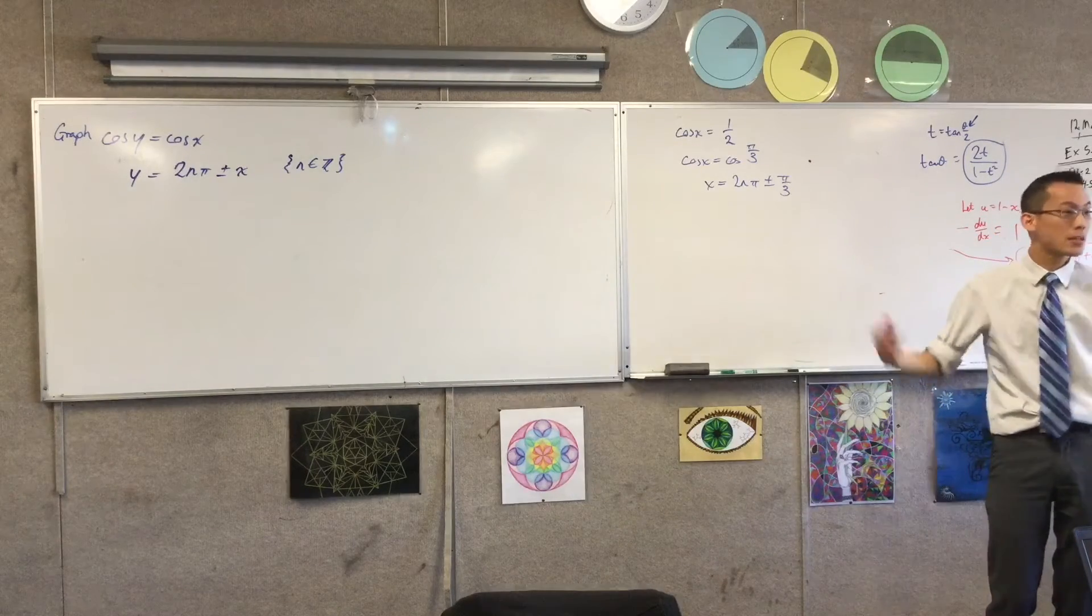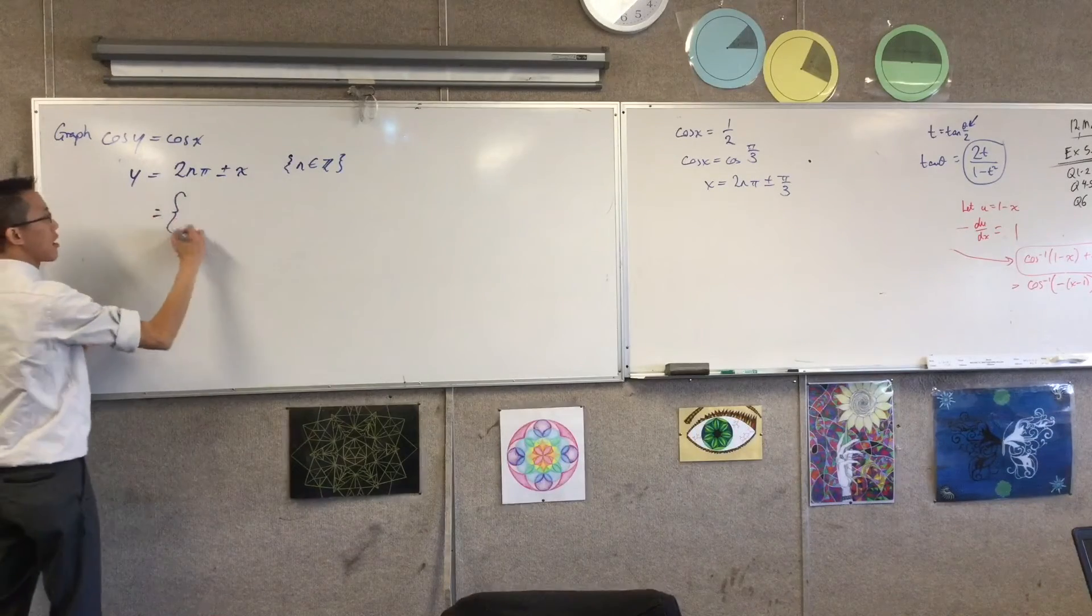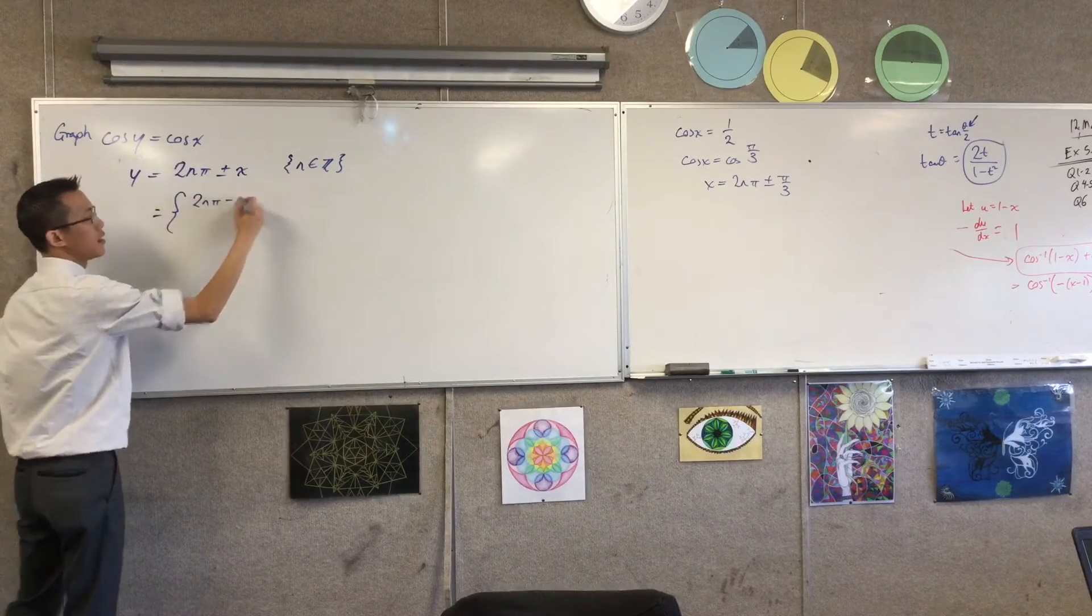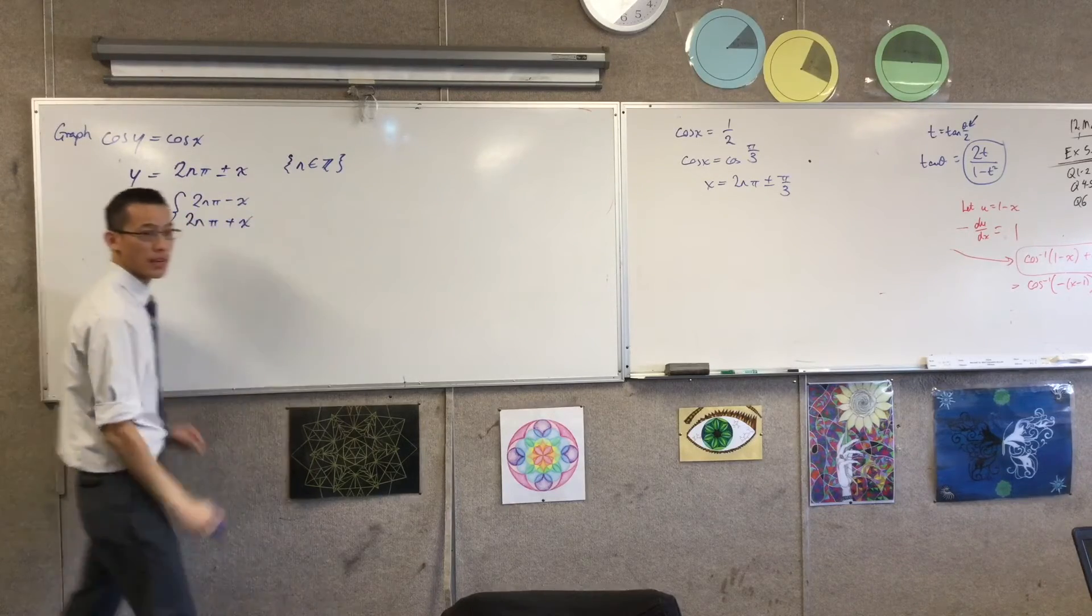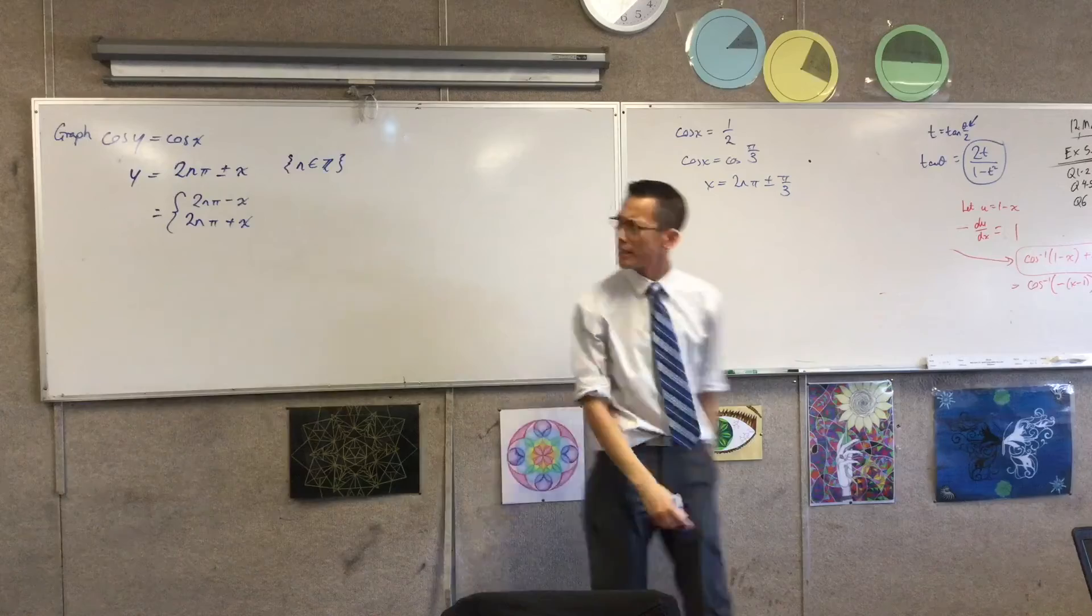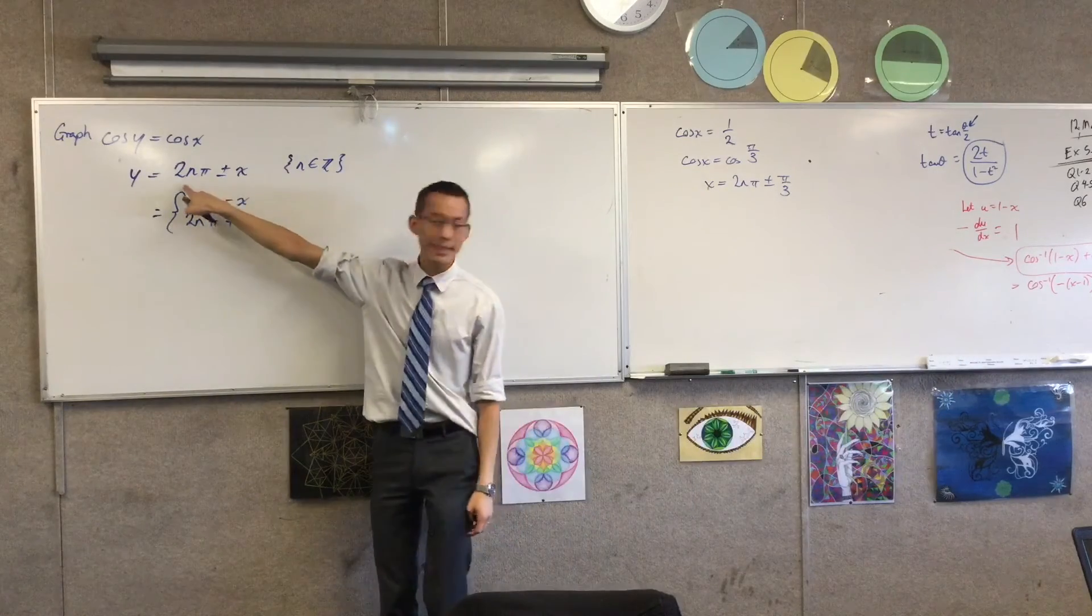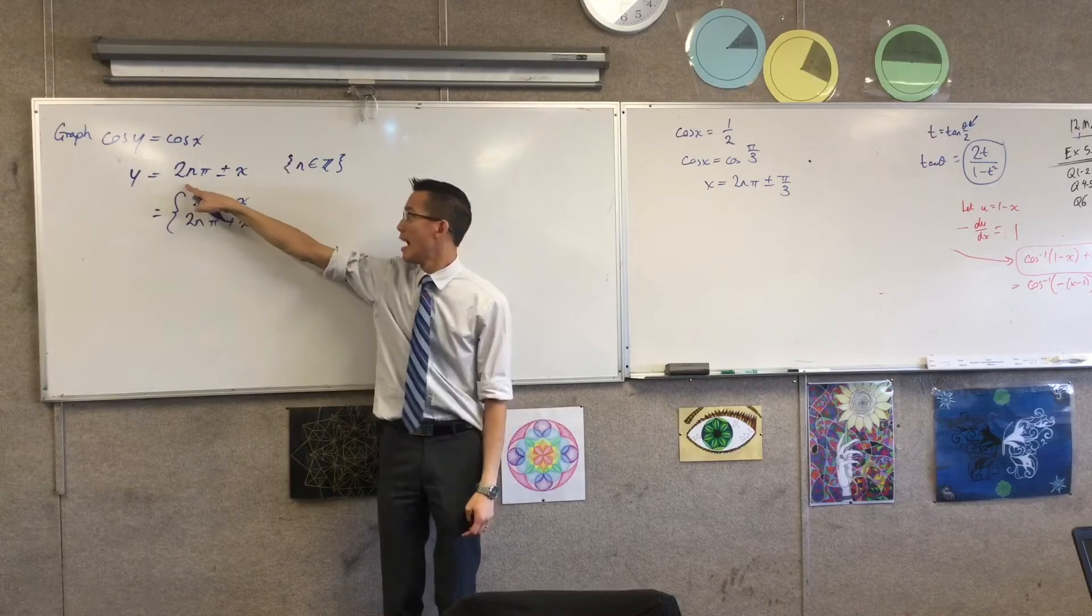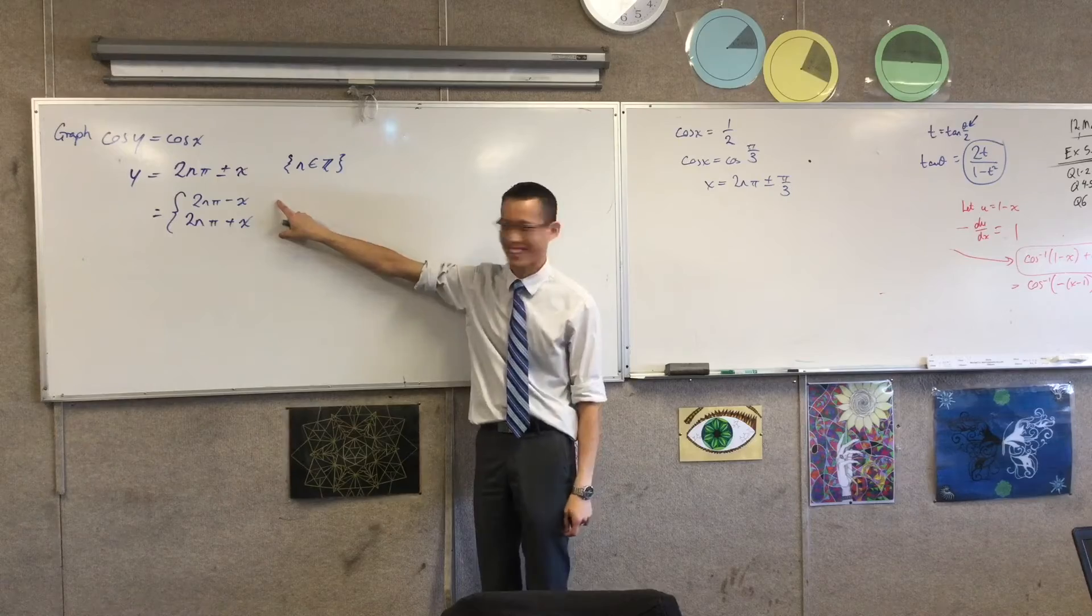There's the plus or minus, right? Which is itself shorthand for this. 2nπ, there's a negative case, and 2nπ, there's a positive case. So now what I've got is, for starters, the 2nπ tells me I've got an infinite list of things, okay? And then the plus or minus tells me, hey, actually, I've got two infinite lists of things.